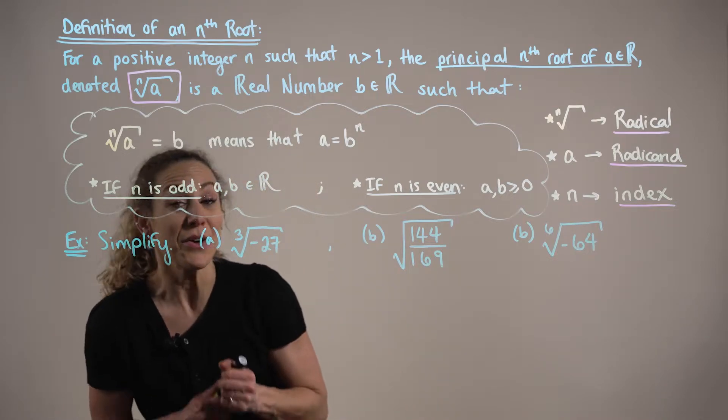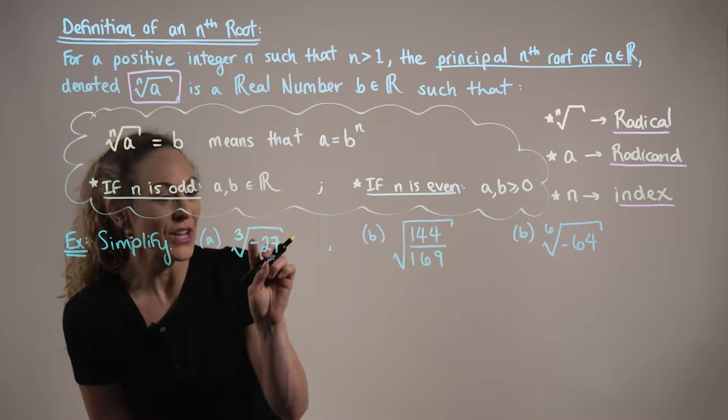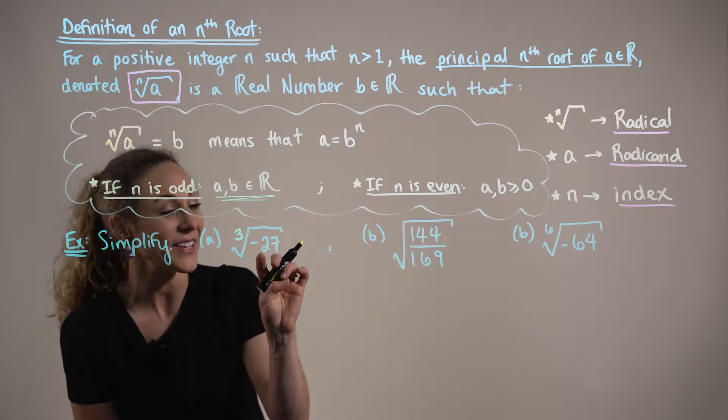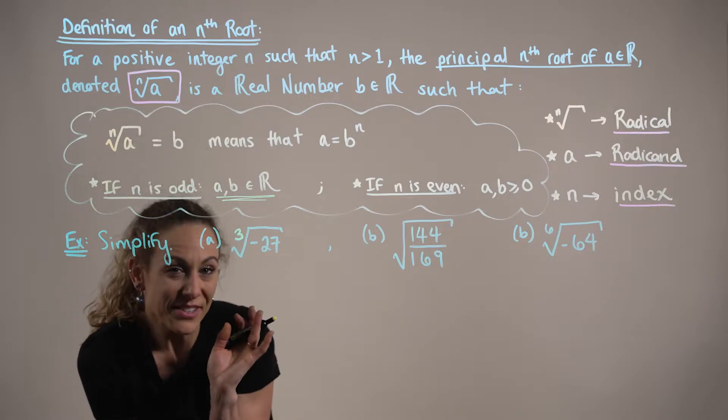Now, in part a, notice that the index is positive three. So, since three is an odd number, we know that there's no restrictions on the radicand. So, having the third root of a negative is okay. So, we are asking ourselves, what real number can be multiplied together three times to give us negative 27?